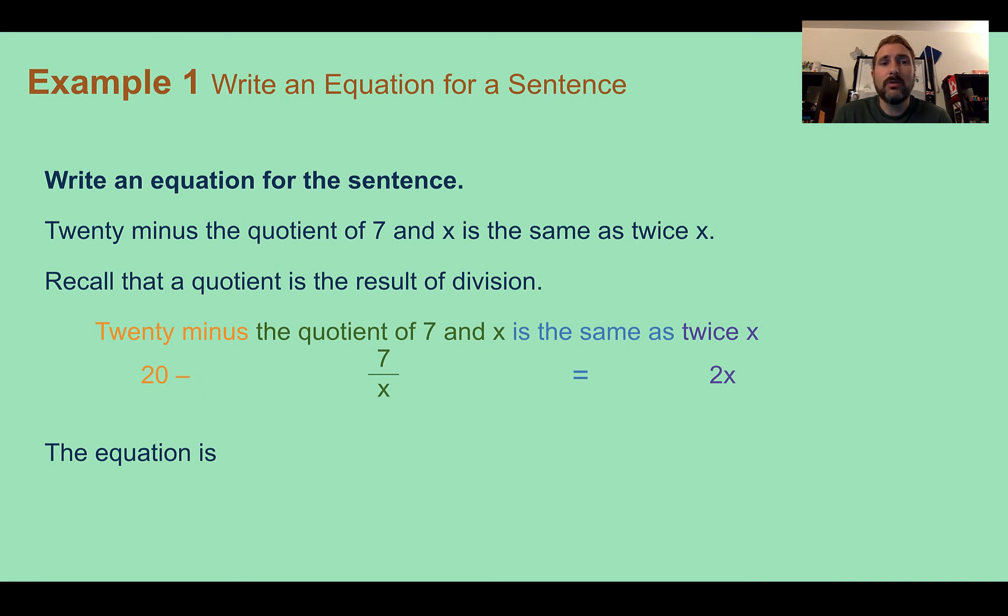Example one, write an equation for the sentence. 20 minus the quotient of 7 and x is the same as twice x.